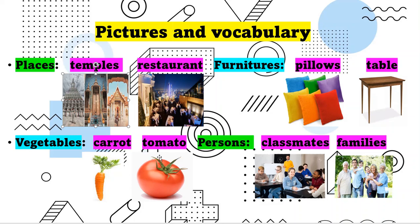Next, tomato. This is a vegetable that is red in color. When you eat tomatoes it is good for your skin. This is tomato. Next, for persons, we have classmates and families.